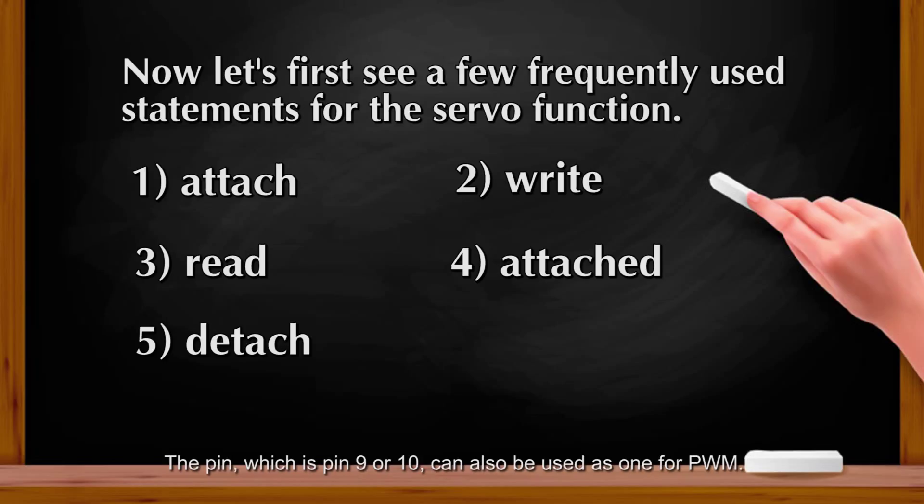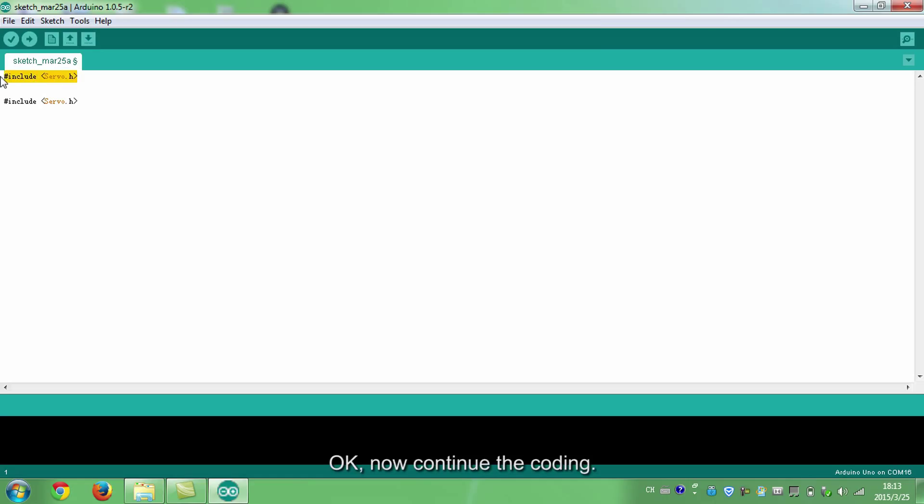The pin, which is pin 9 or 10, can also be used as one for PWM. Please note that the format of the statement above should be servoName.statement. You can name your servo as you want. For example, myServo.attach9. Here the name is myServo and the statement is attach. In this experiment, we will use just the first two statements. You may explore the rest yourself. Or they may be used in the subsequent experiment. OK, now continue the coding.